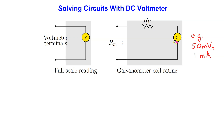The coil is characterized by both a voltage rating and a current rating. These ratings are typically in millivolts and milliamps. For example, the coil rating can be 50 millivolts and 1 milliamp. This means that when the coil is carrying 1 milliamp of current, the voltage drop across the coil is 50 millivolts, and the galvanometer pointer is deflected to its full-scale position.